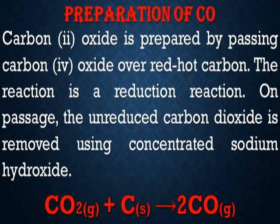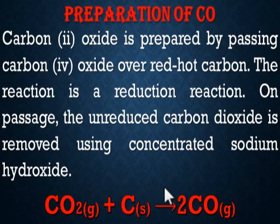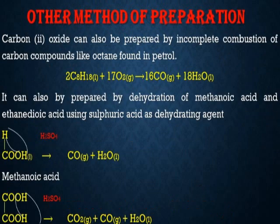Preparation of CO, that is carbon monoxide: carbon monoxide is prepared by passing carbon dioxide over red hot carbon. The reaction is a reduction reaction. On passage, the oxygen is reduced. Carbon monoxide is removed using concentrated sodium hydroxide. The reaction is: CO₂ gas (carbon dioxide) reacting with red hot carbon, which is solid carbon, to give you two molecules of carbon monoxide.